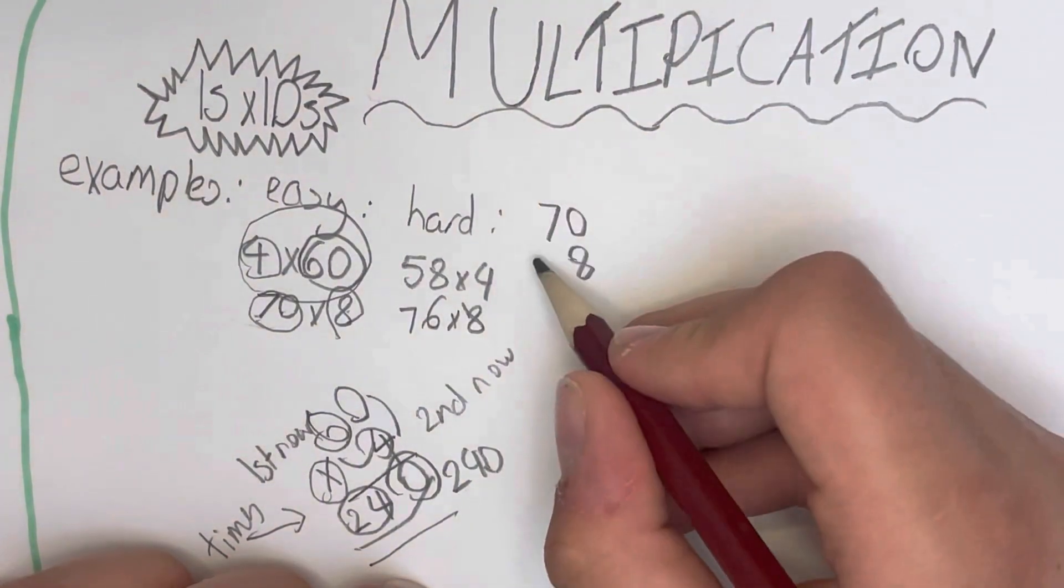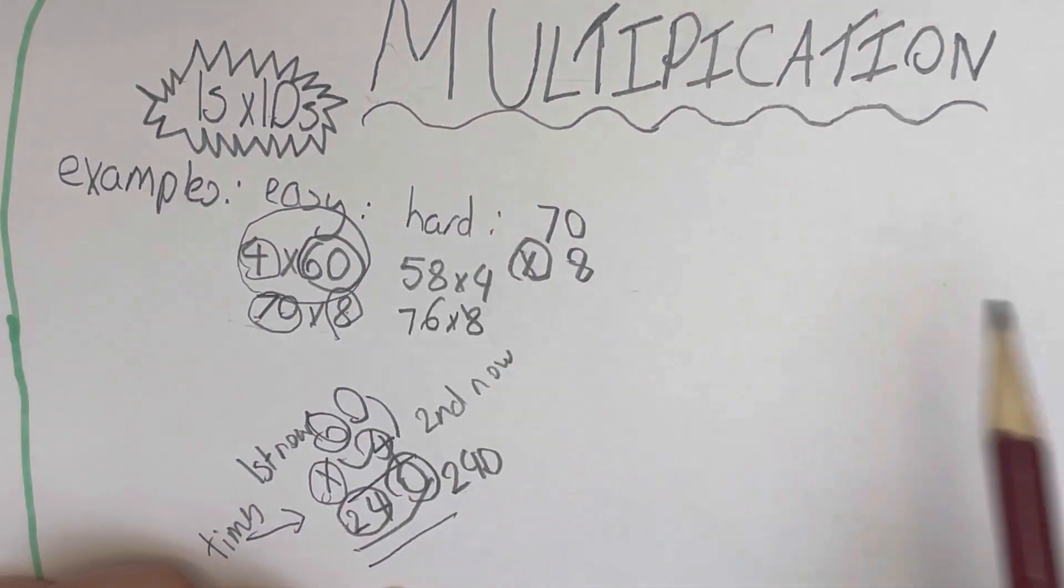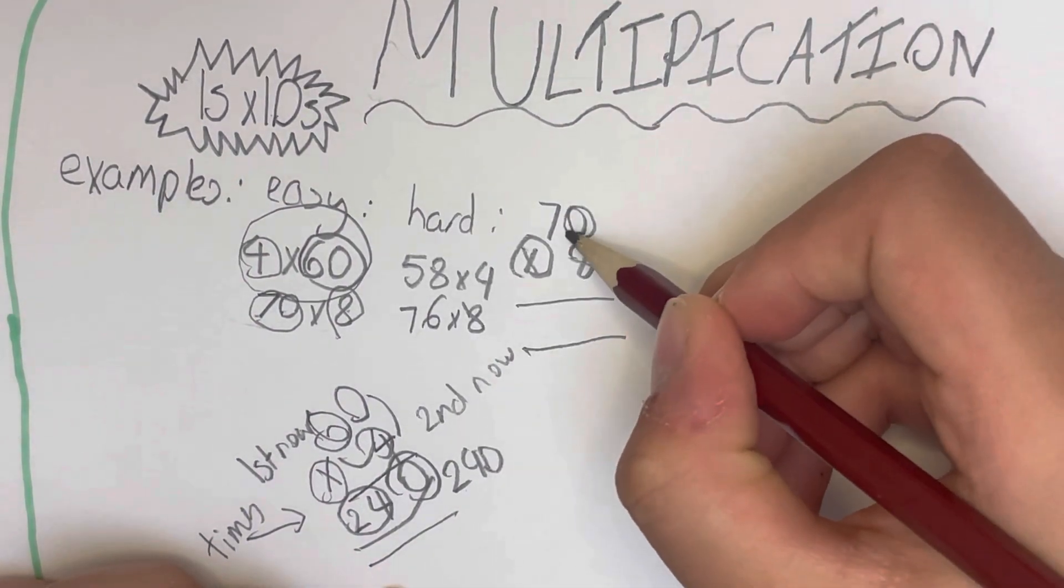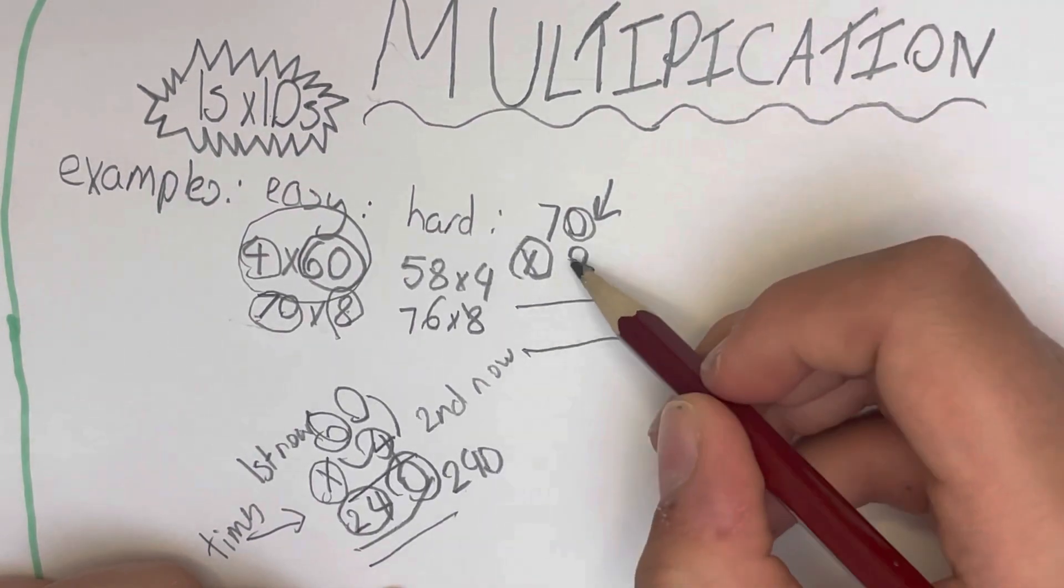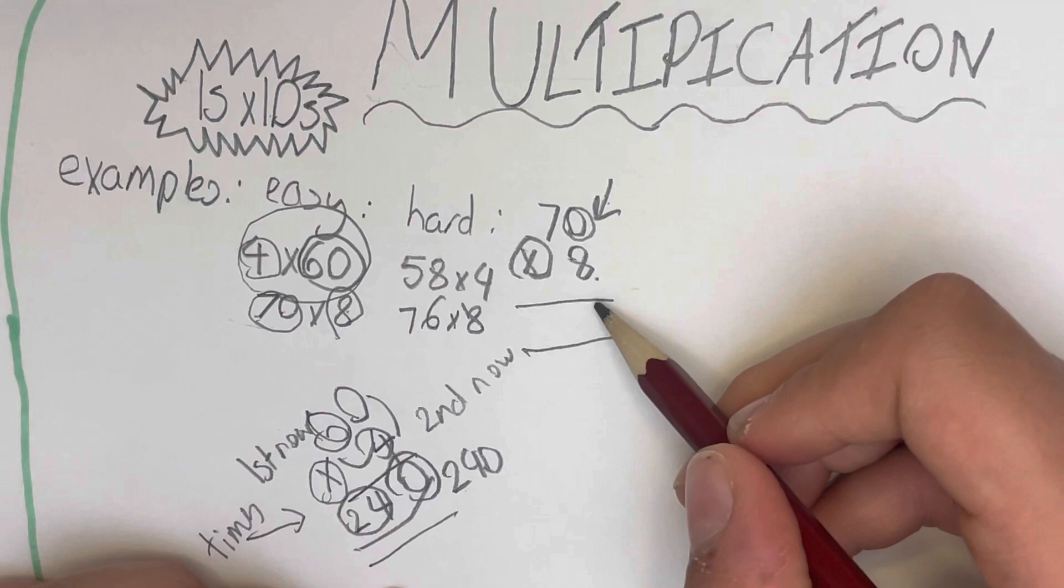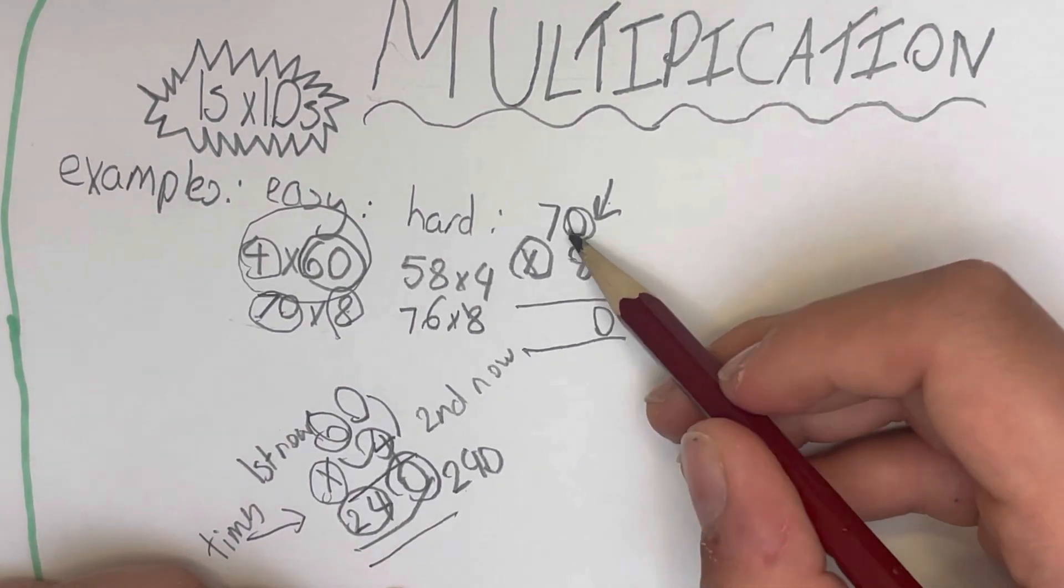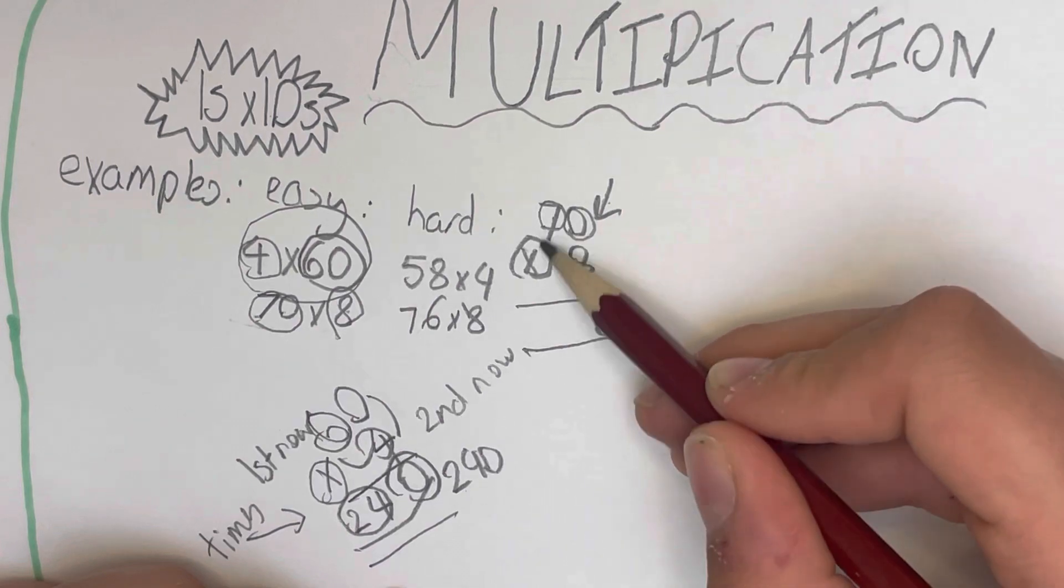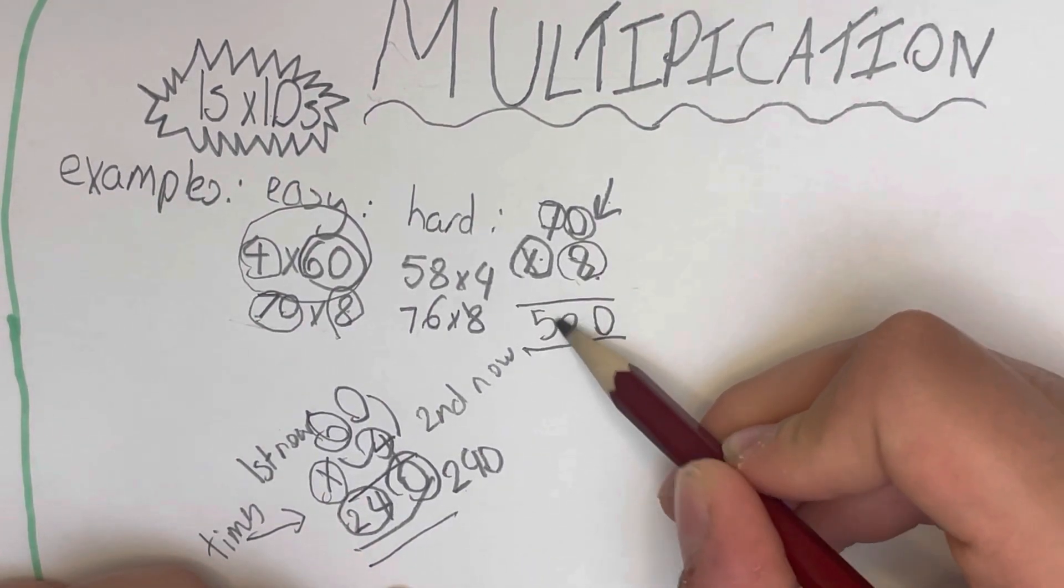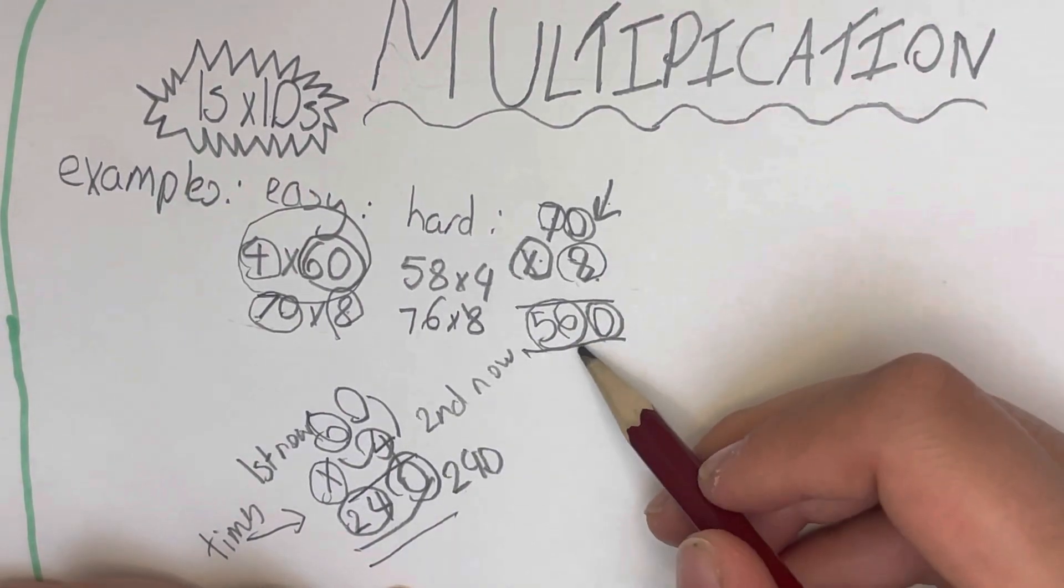Right, so the first digit, 0 times by 8. So 0 times by 8, as we know, anything times 0 is 0. And 7 times 8, as we know, is 56. So we got 0 and we got 56, and that's how we get the answer 560 for the question 70 times 8.